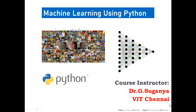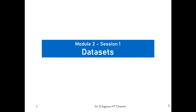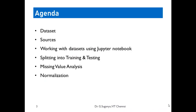This session covers data pre-processing — a set of activities beginning with what a dataset refers to and where you can get datasets to work with. The agenda includes how a dataset looks, the different sources to download data, how to import it into Jupyter notebook, and how to split it for training and testing.